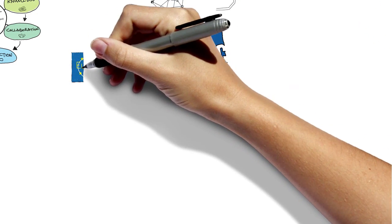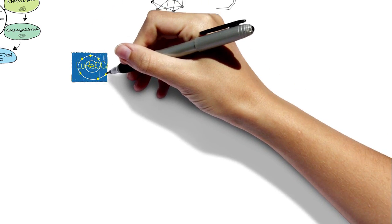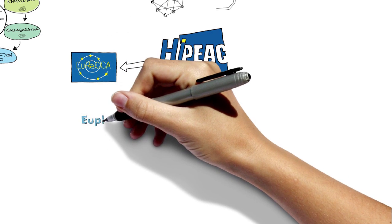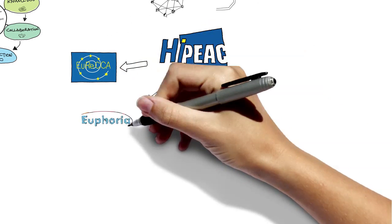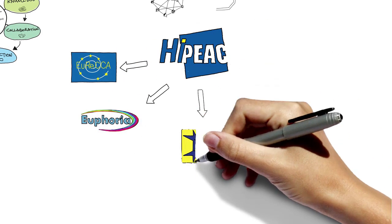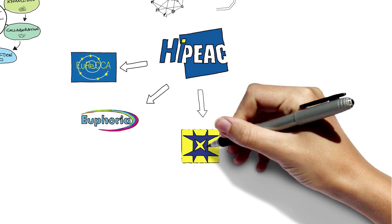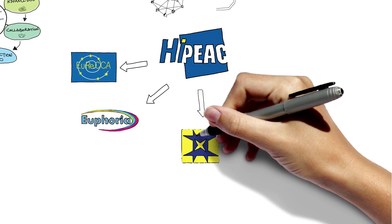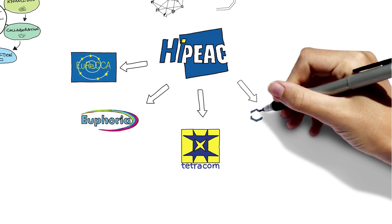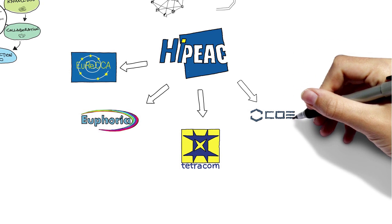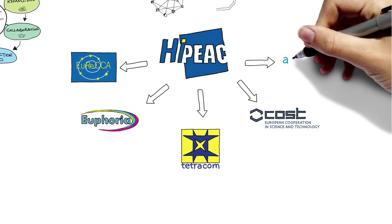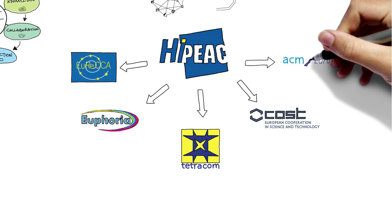Over the years, the network has created several spin-off initiatives. There's EUREKA, a virtual EuroLab on computer architecture, and EUPHORIA, a virtual EuroLab on programming. Individual technology transfer projects run by HiPEAC members now receive financial support from the TETRACOM project. Several COST actions have originated from sub-communities of HiPEAC. The HiPEAC Network also helped in founding ACM Europe. All these spin-off initiatives strengthen the HiPEAC community.